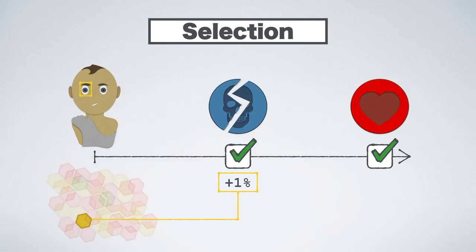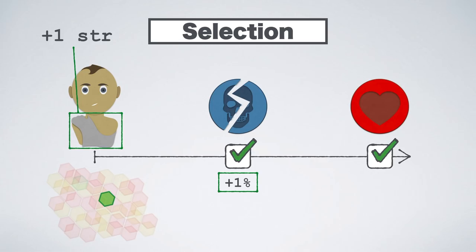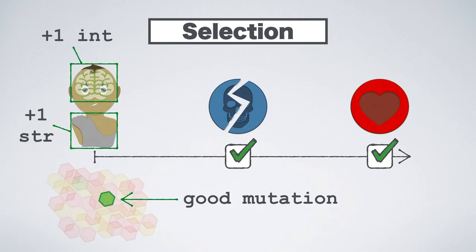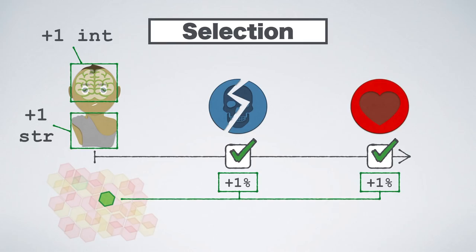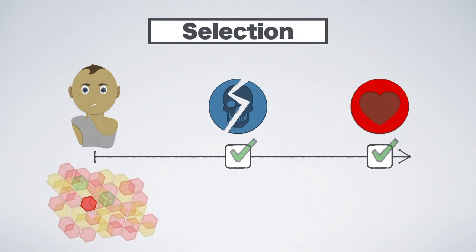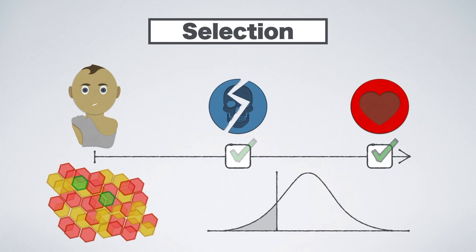The effect a gene's code has on you is called its phenotype. These effects can be physical, like making you a bit more athletic, or neural, like making you a bit more empathetic. Those would be examples of good gene mutations, which produce phenotypes that make it slightly more likely your body meets those goals. Whereas a bad gene mutation produces a phenotype that makes it slightly less likely your body meets those goals. The accumulation of the phenotypes of all your genes and their specific mutations determines how likely you are to pass them on.